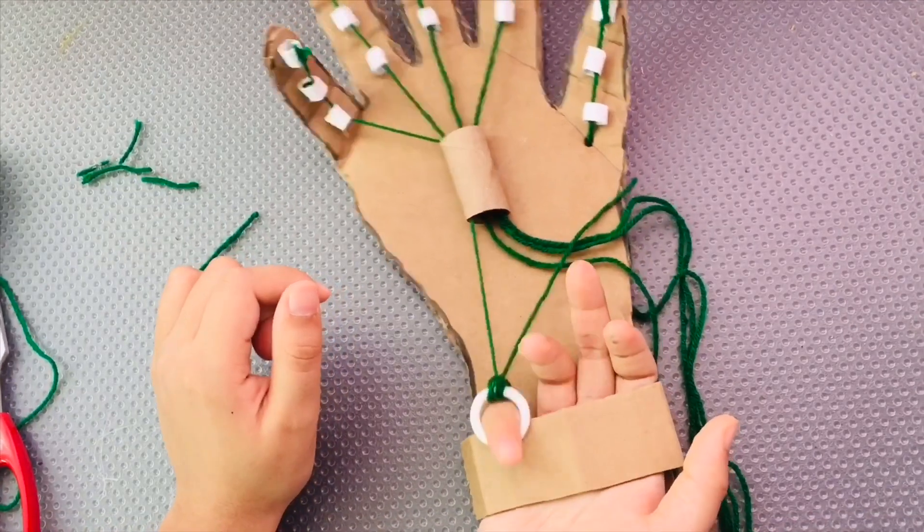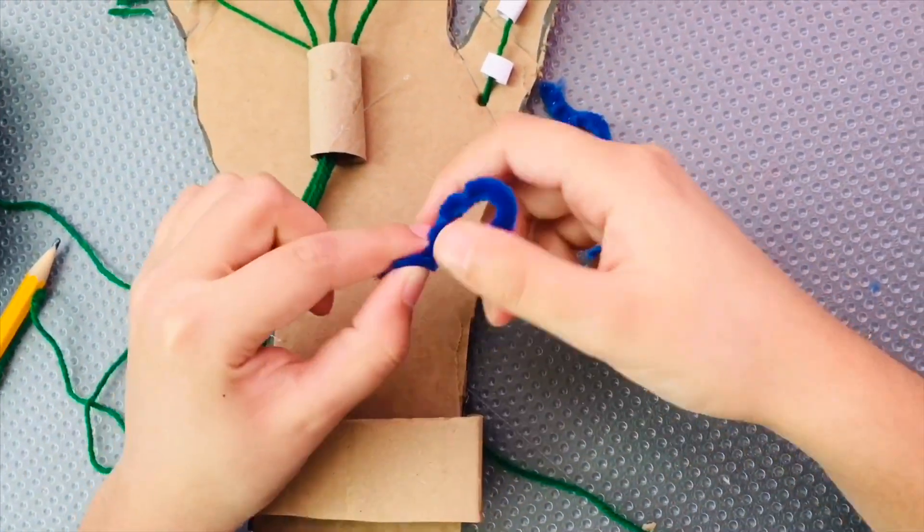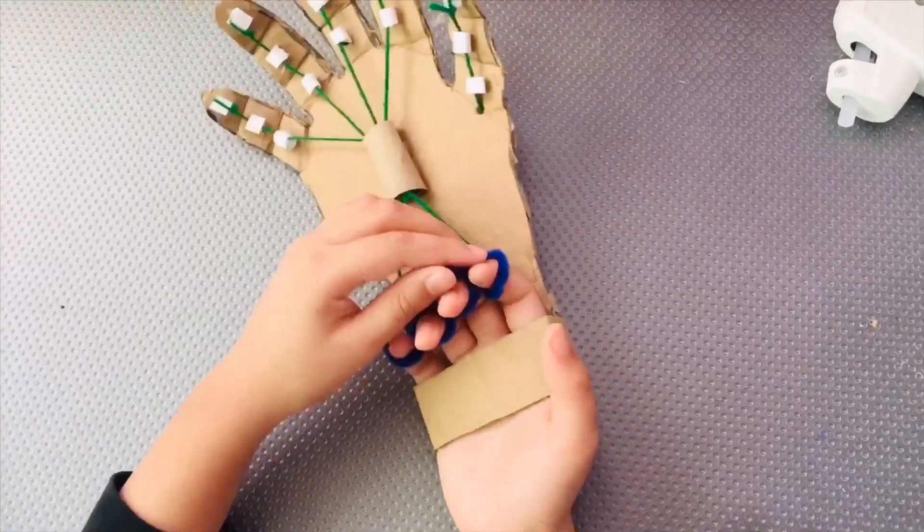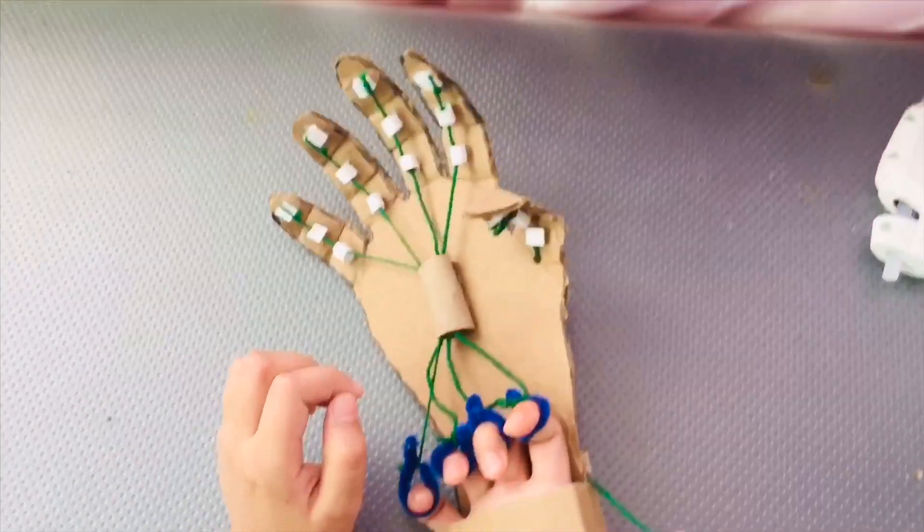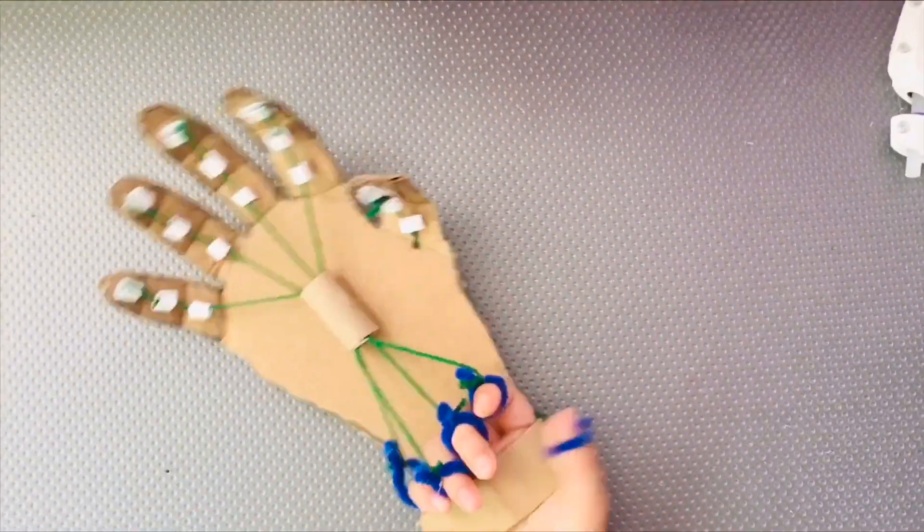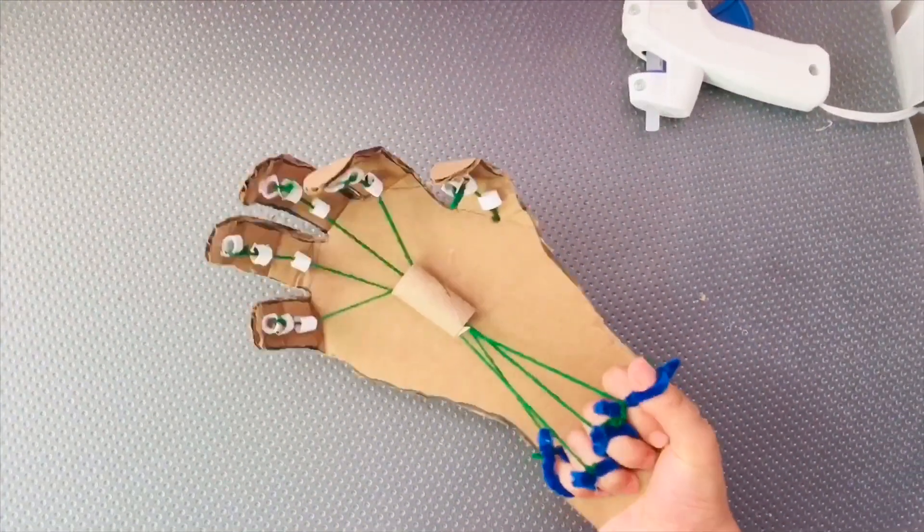Take a ring or pipe cleaner, make it into a circle, and attach it to the strings, and put your fingers through it. Now, you can move your robotic hand and make a grip.